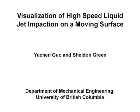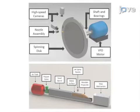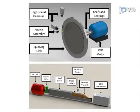The overall goal of the following experiment is to study the impaction of a free surface liquid jet on high-speed moving surfaces. This is achieved using two different apparatuses.